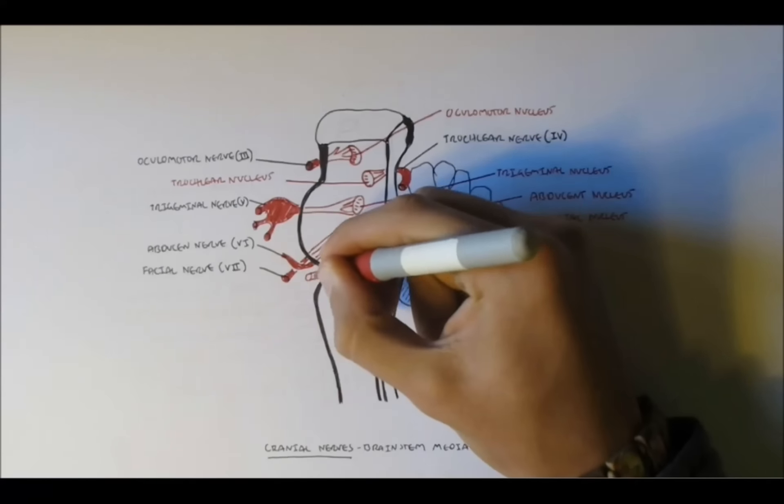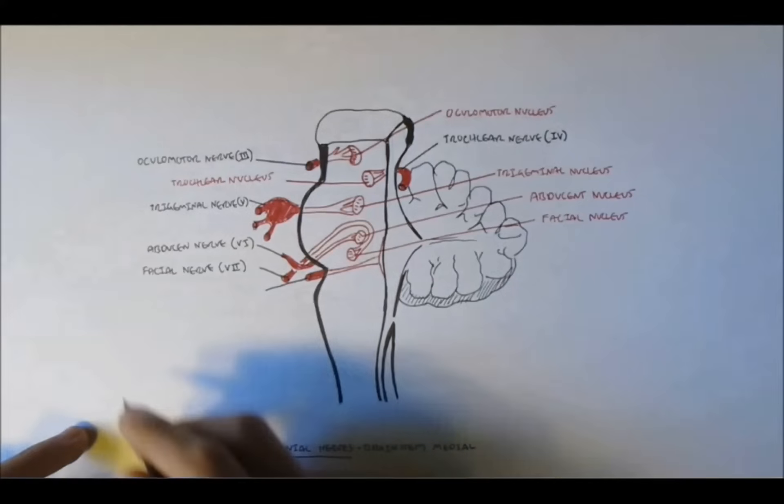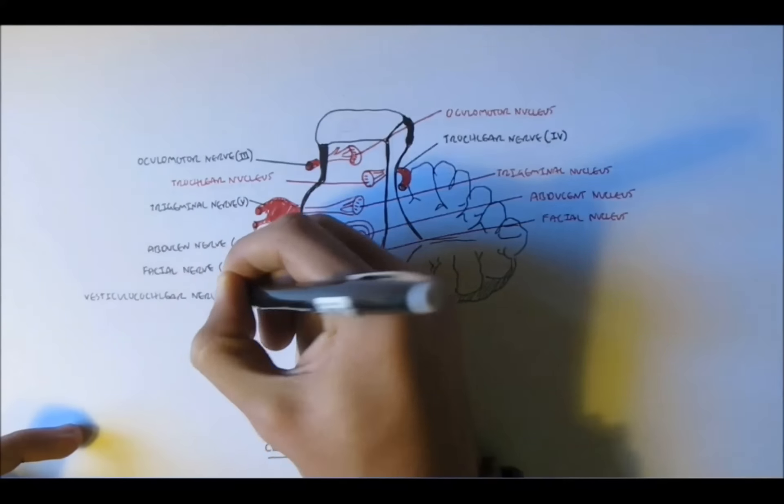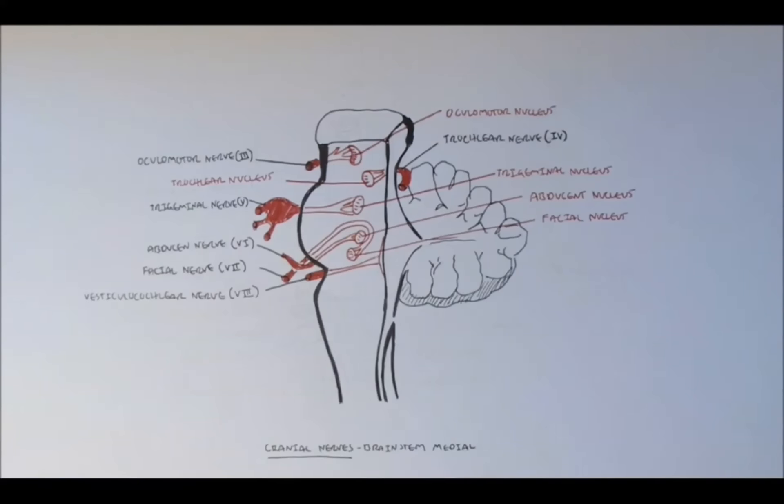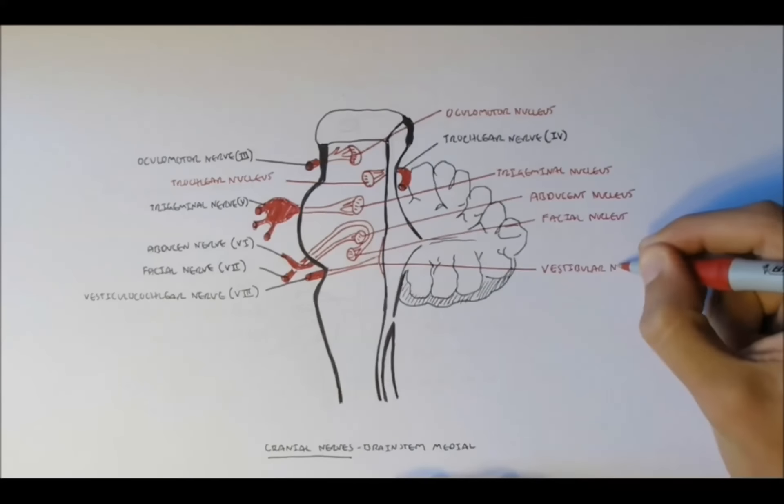Now at just the very back where the cerebellum is, that's actually where the vestibular nucleus is. So this must be the vestibular cochlear nerve, nerve 8. And here's the vestibular nucleus.